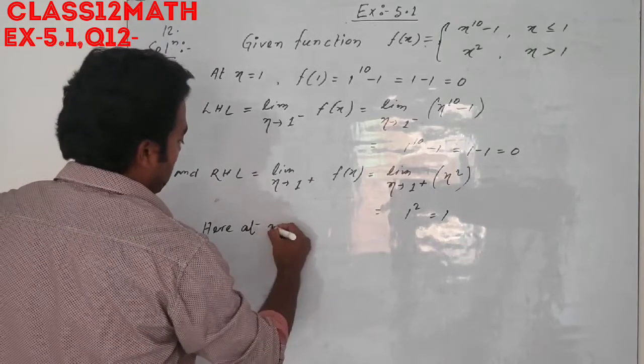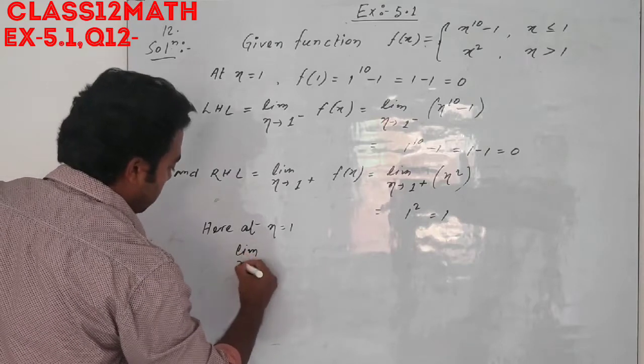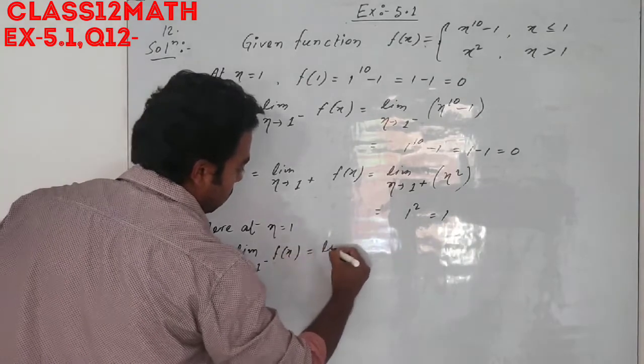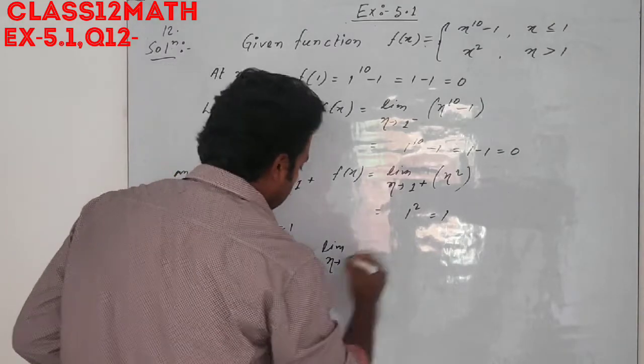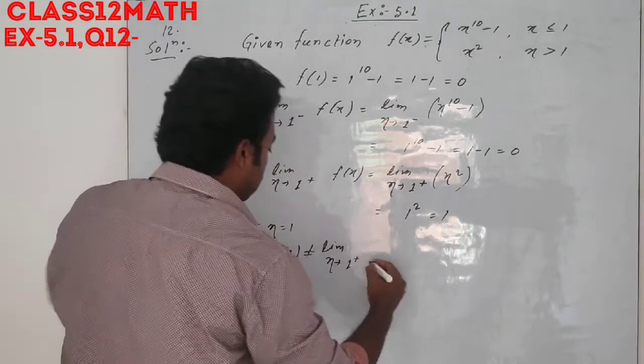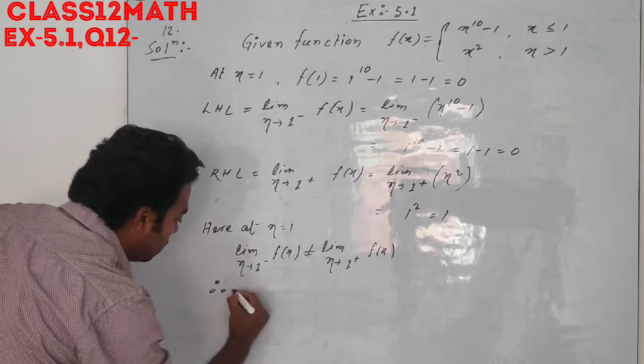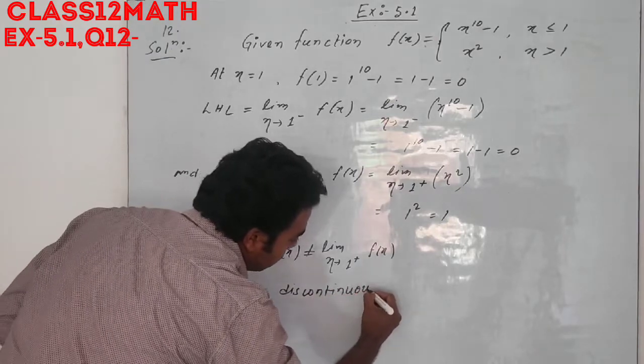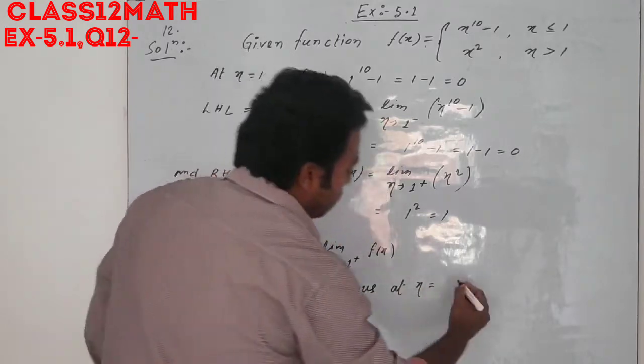Here at x equal to 1, limit x tends to 1 minus f(x) is not equal to limit x tends to 1 plus f(x). Therefore f is discontinuous, f is discontinuous at x equal to 1.